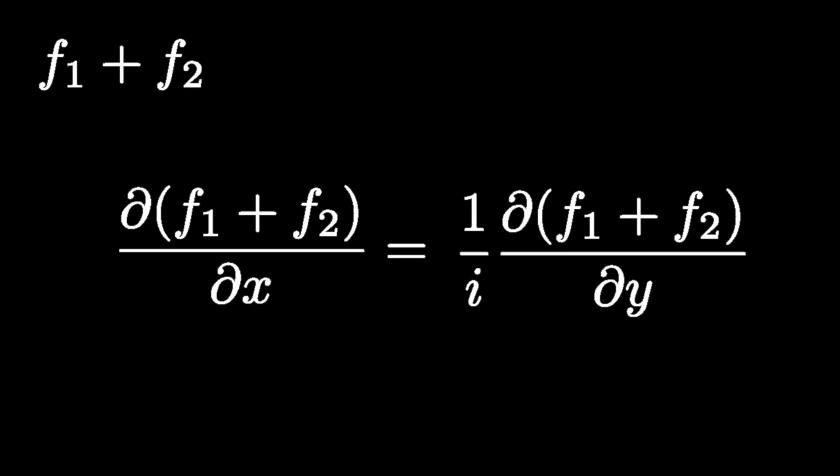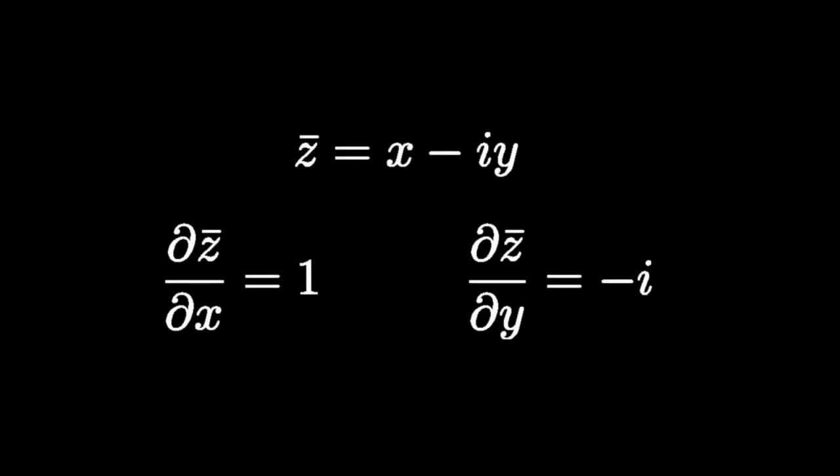Feel free to fill in the details in the comments. By the way, an example of a function which does not satisfy the Cauchy-Riemann equation is the complex conjugate function.